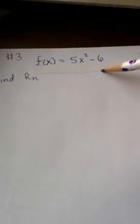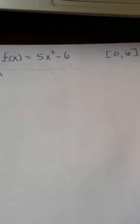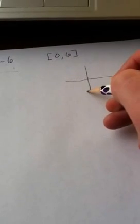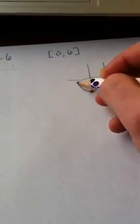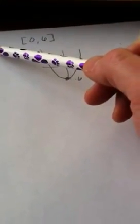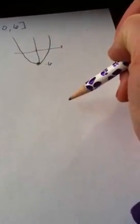For quiz 4 number 3, we want to find R sub n and the area underneath the graph on the interval from 0 to 6. This is a parabola shifted down 6 units, so the vertex is at negative 6. It crosses the x-axis at plus and minus the square root of 6 fifths, and we're integrating from 0 to 6.